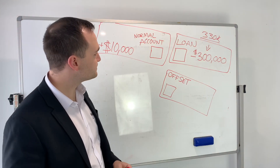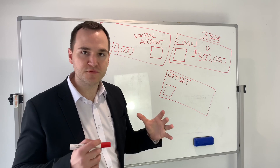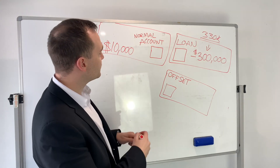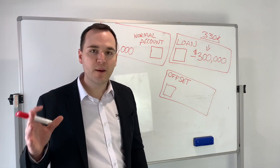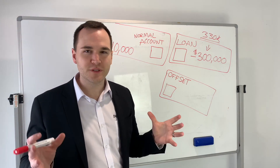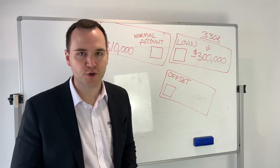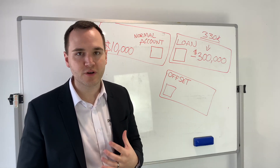But getting back to it — how it works when you first buy a property, this is essentially what it looks like. Some investors do it differently. There's no right or wrong. This is how I do it a lot. I've got 21, hopefully 22 properties soon.